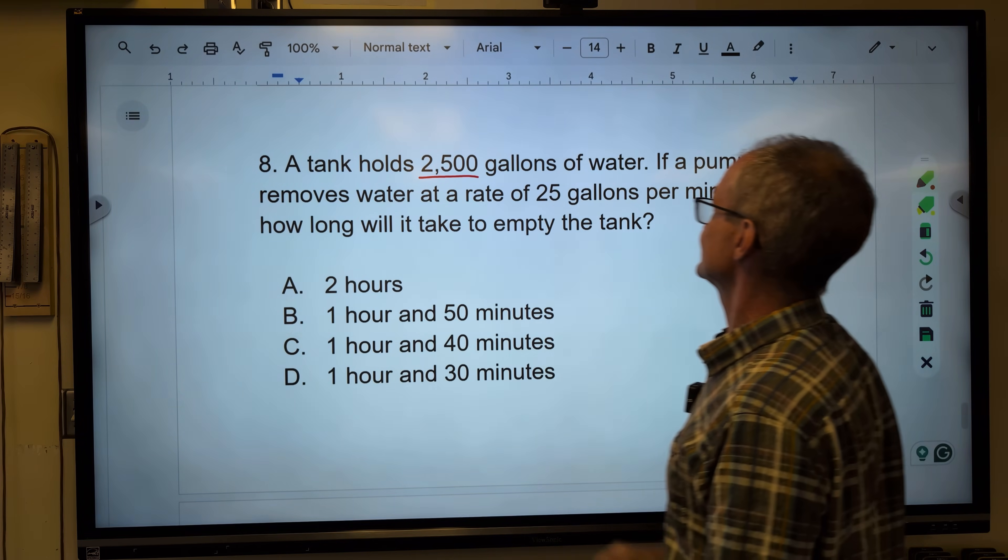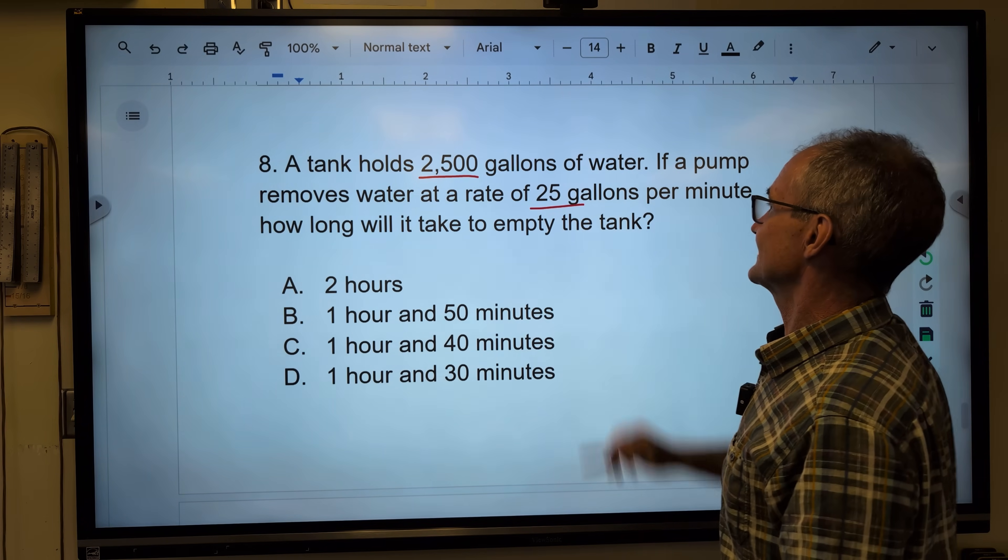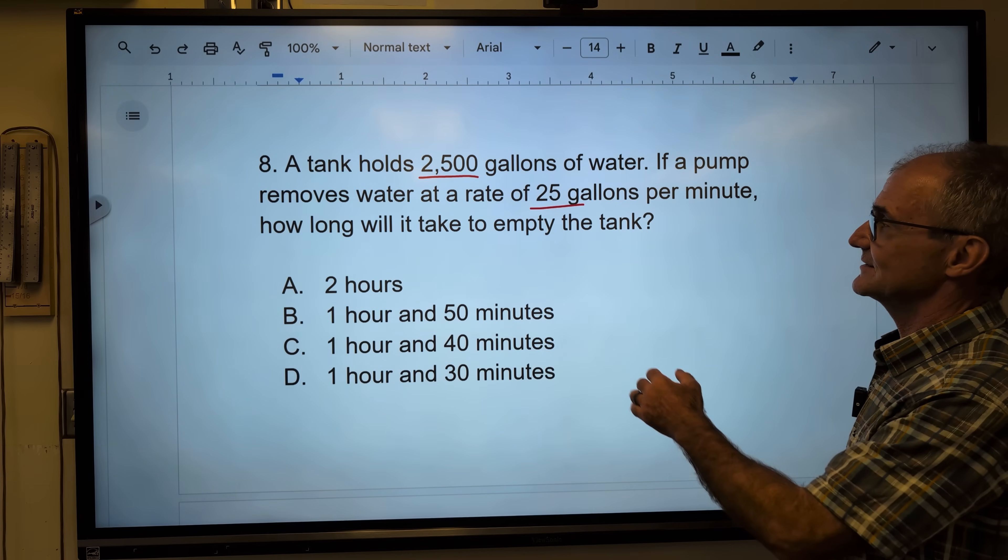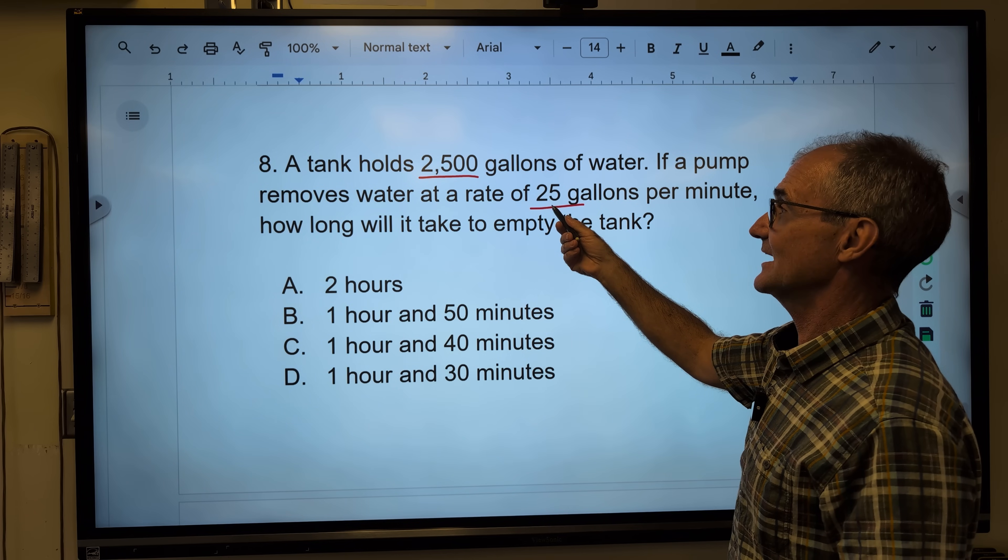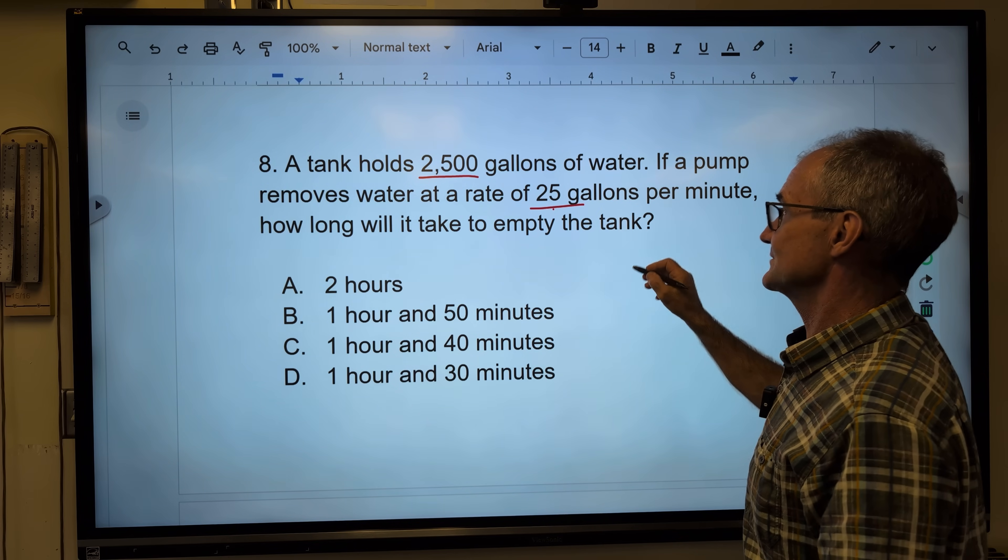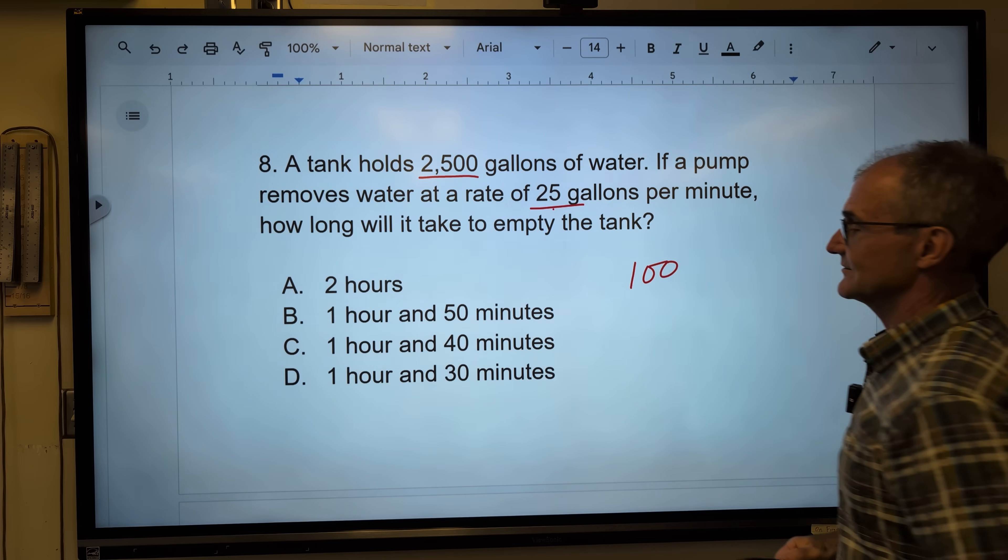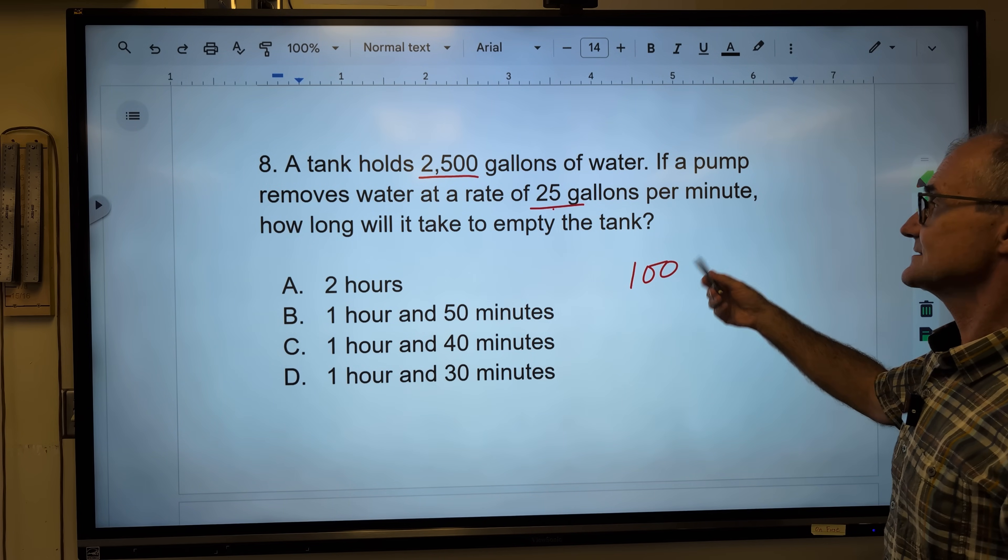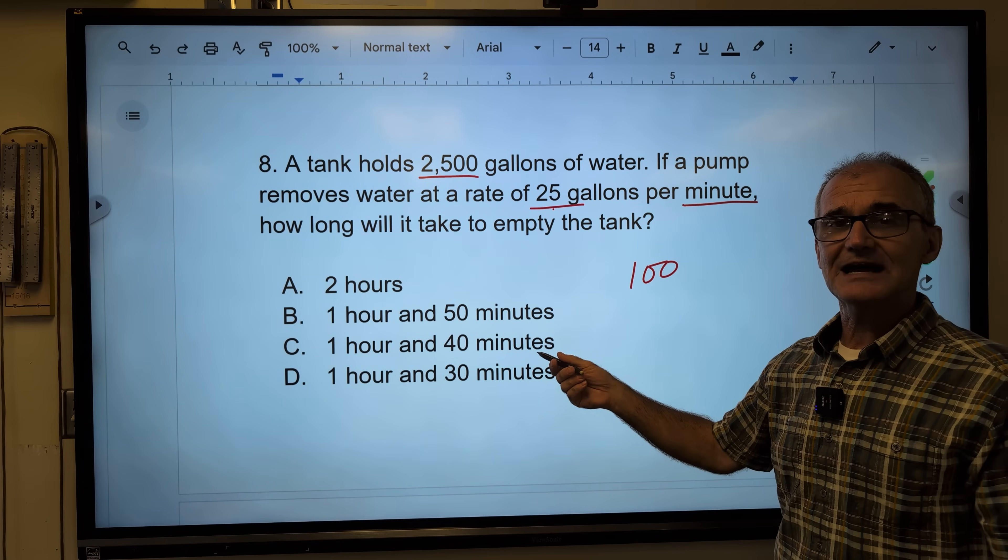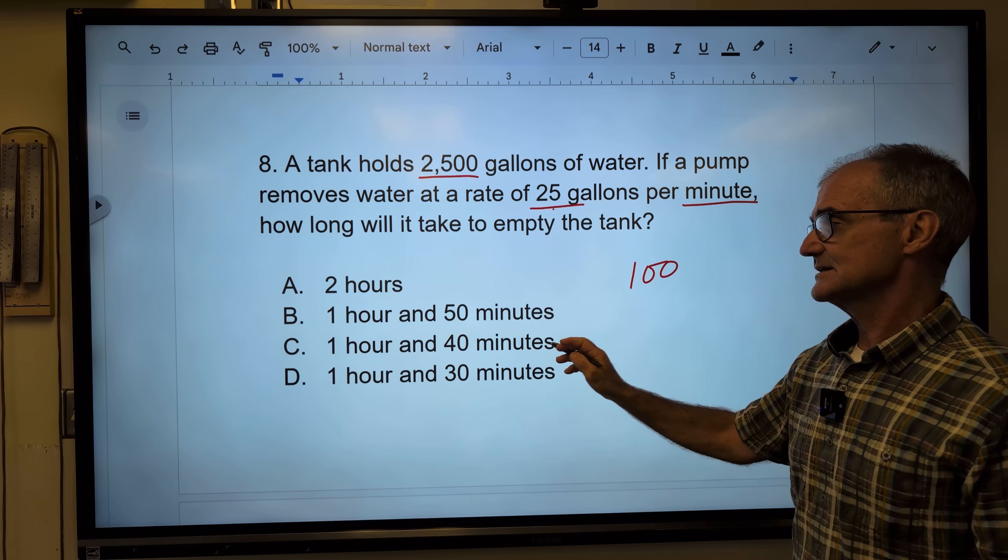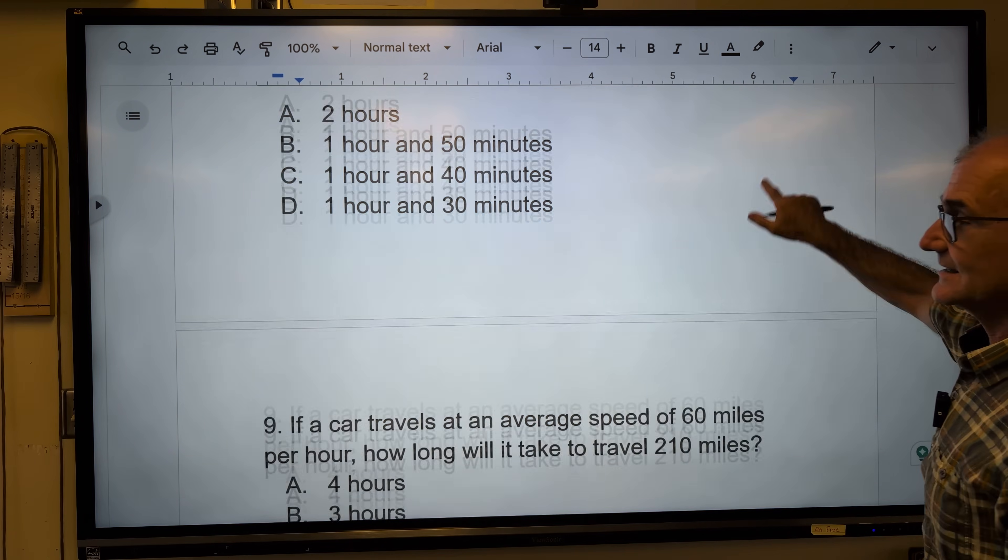Tank holds 2,500 gallons of water. Pump removes water at 25 gallons per minute. How long will it take to empty the tank? So I'm just going to do the 2,500 divided by the 25. That's going to give me 100. 100 times 25 is 2,500. So that gives me 100 minutes. I don't see that up here. 60 minutes to the hour. So 100 minutes is the equivalent of one hour, 40 minutes.